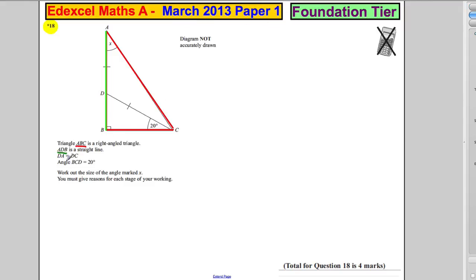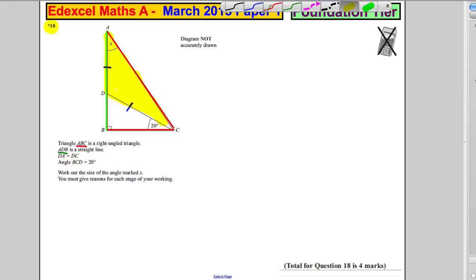DA equals DC, so D to A, that distance there, is the same as D to C. Hence this triangle here is an isosceles triangle. If these two sides are the same, this is an isosceles triangle. I'm going to color in the isosceles triangle for us.